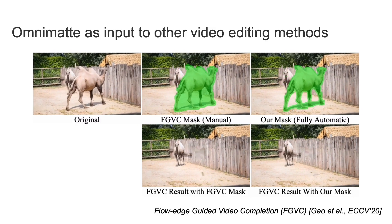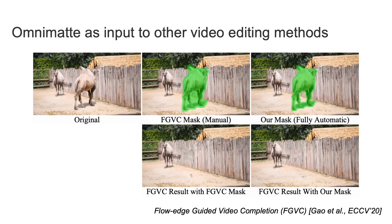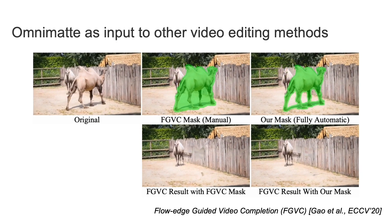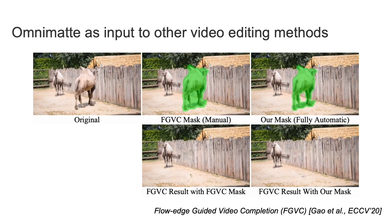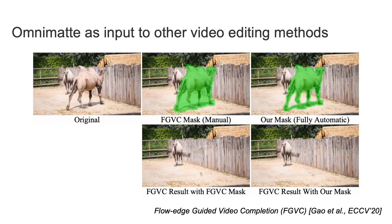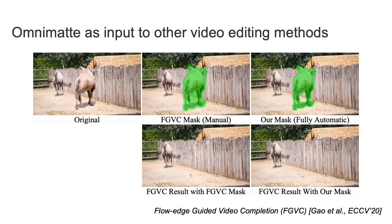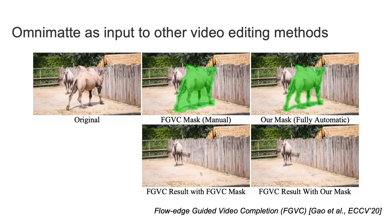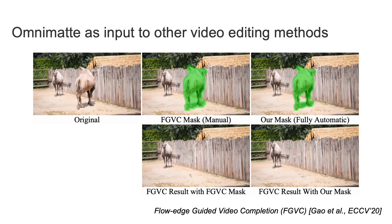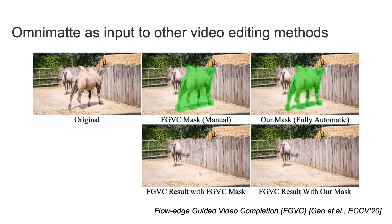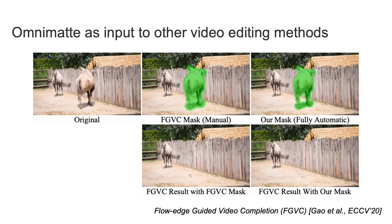Our omnimats can also be used as input to other video editing methods, such as video completion for object removal. In the middle column, we show the input mask which was manually labeled to include the shadow and the result of a video completion method. To the right is our automatic mask, obtained by thresholding the predicted alpha channel of the omnimat. Inputting this mask to the FGVC method yields a similar removal result despite our input mask being obtained automatically rather than manually.